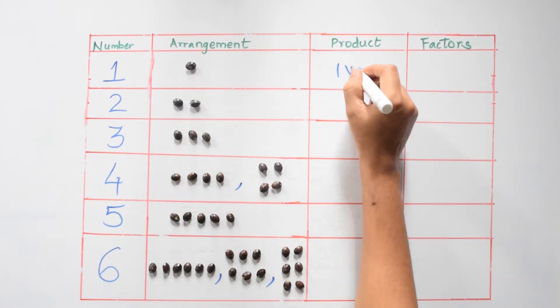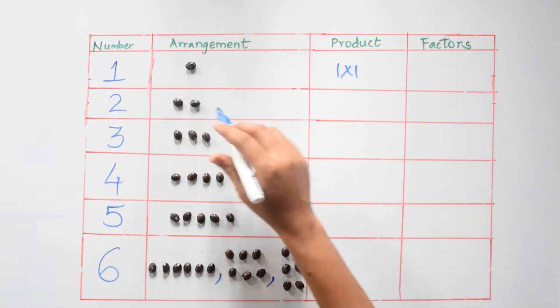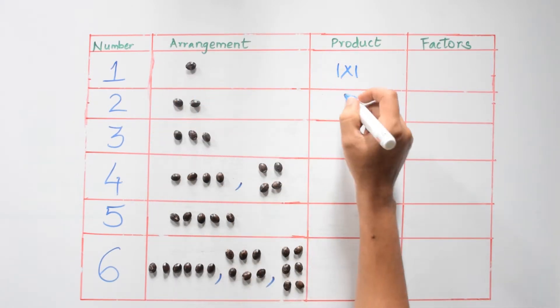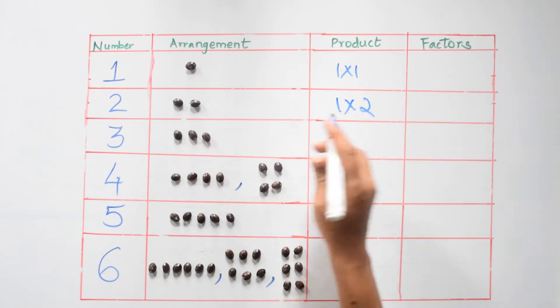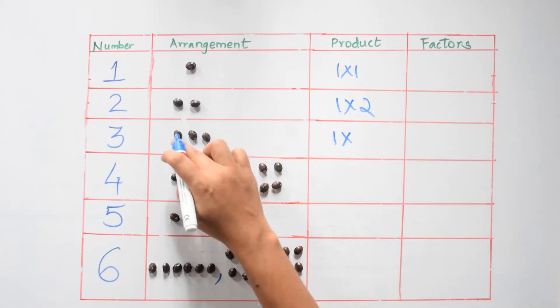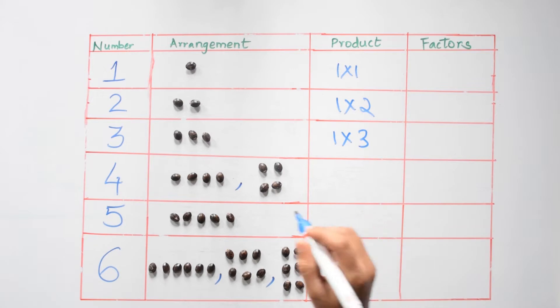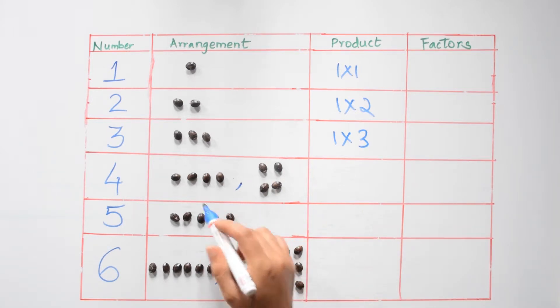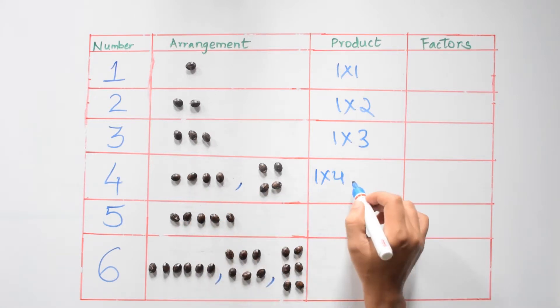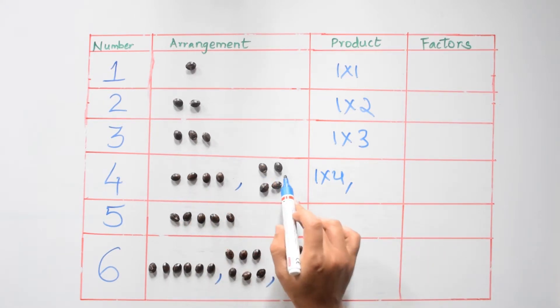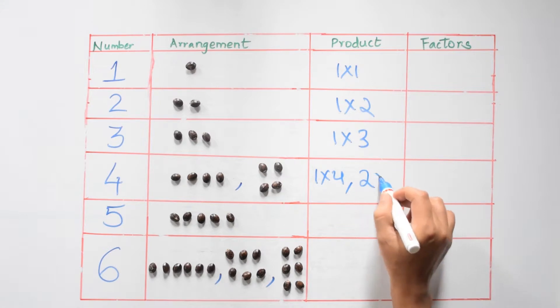Two has one row times two columns. Three has one row times one, two, three columns. Now four is arranged in two ways. The first one has one row times one, four columns. The second one has two rows times two columns.